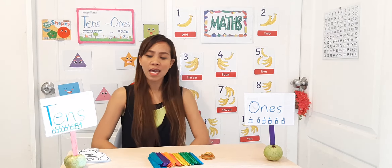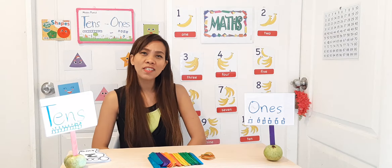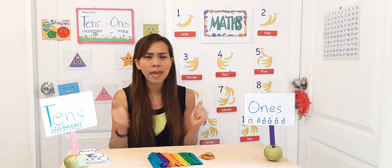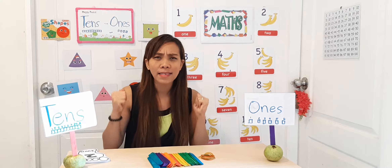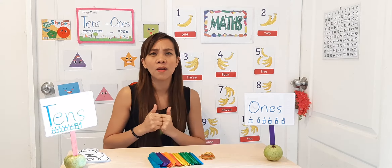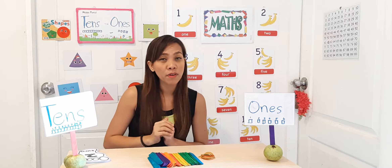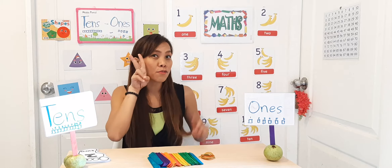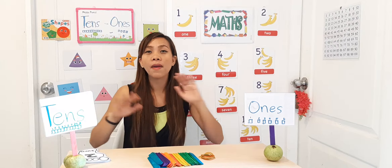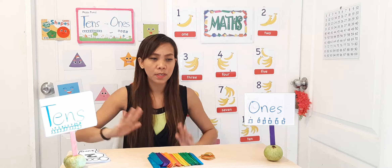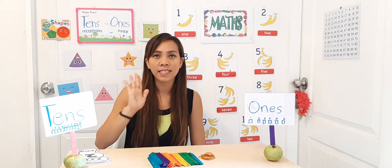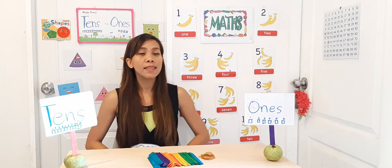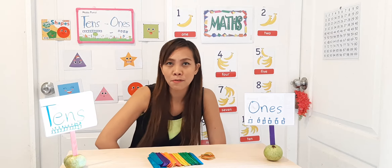So before we start, let's count together. Keep practicing counting at home — from 1 to 100, counting by twos, 5s and 10s. Keep practicing that at home. So before we start, let's count by twos.